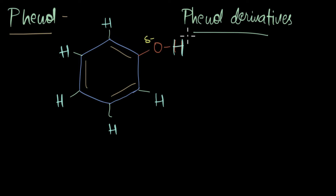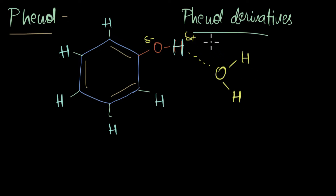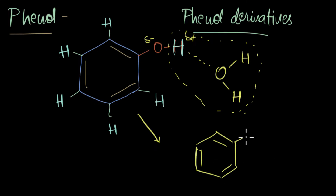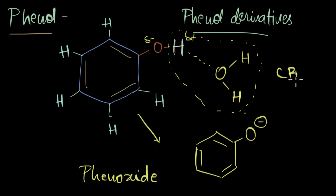This hydrogen is attracted by a neighboring water molecule already present in the phenol aqueous solution. This attraction is strong enough that it leaves to make a hydronium ion, which gives us our conjugate base. This conjugate base is called phenoxide.